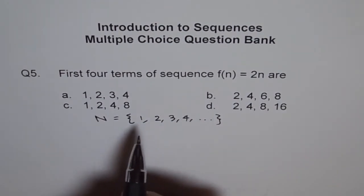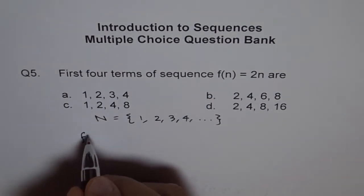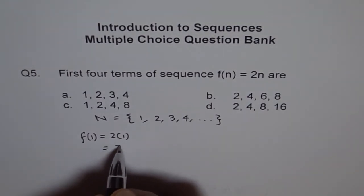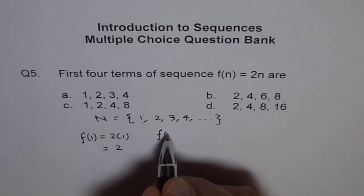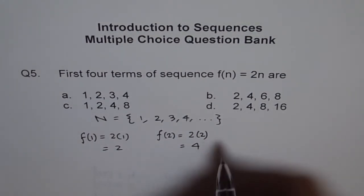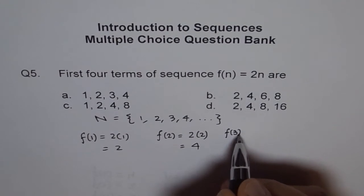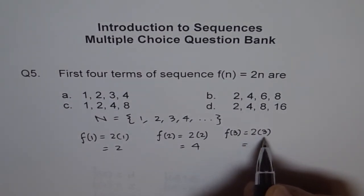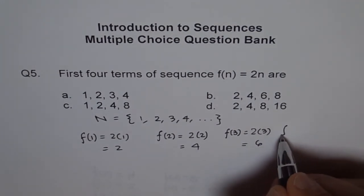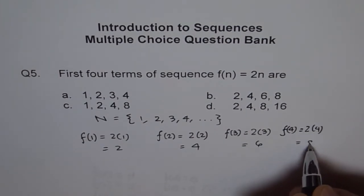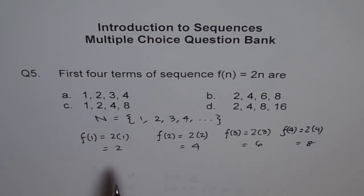We are interested in the first four terms, so we will write f(1) = 2 times 1, which is 2. f(2) = 2 times 2, which is 4. f(3) = 2 times 3, which is 6. And f(4) = 2 times 4, which is 8. So the correct sequence is 2, 4, 6, 8.